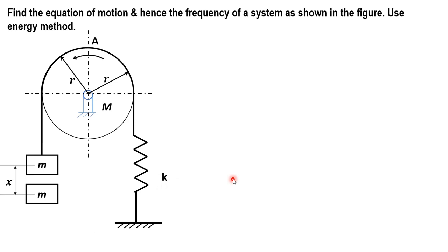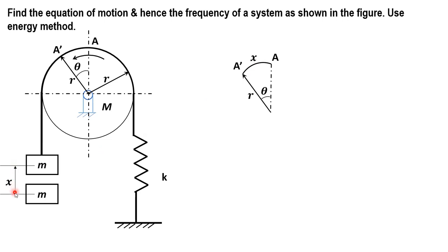Suppose the initial position is at point A, and when the mass is displaced in the downward direction, point A will get displaced to A dash. The distance x and the angular distance are related as follows: when A moves to A dash, x is the distance displaced in the downward direction, and the same rotation occurs at the drum. So we can say x is equal to r theta, where r is the radius of the drum, theta is the angular displacement, and x is the linear displacement of the mass. The first derivative gives velocity: x dot equals r theta dot, where theta dot is the angular velocity in radians per second.